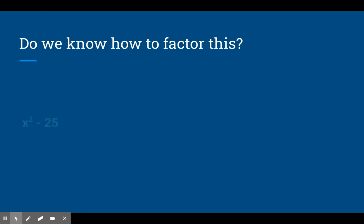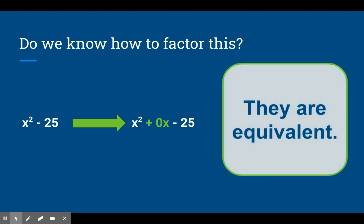So do we know how to factor this, x squared minus 25? So far we have factored trinomials, or tri means three, so polynomials with three terms. Because I don't know how to do this, I can convert it into something that I do know how to do. I do know how to do this: x squared plus 0x minus 25. Notice I did not change the problem at all. Adding a 0x in the center doesn't matter, it doesn't change our problem, they are equivalent.